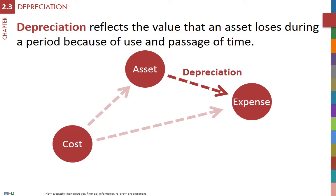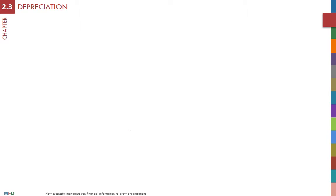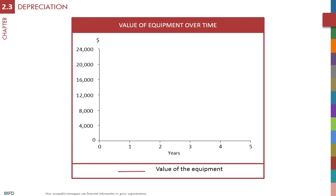Depreciation reflects the value that an asset loses during a period because of use and passage of time. Very often we assume that an asset loses the same amount of value each year of its life. This is called the straight-line depreciation method.